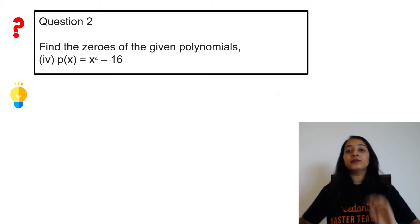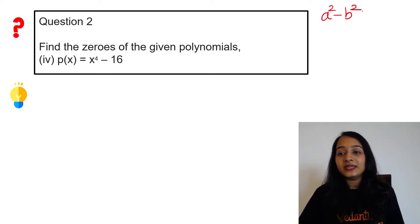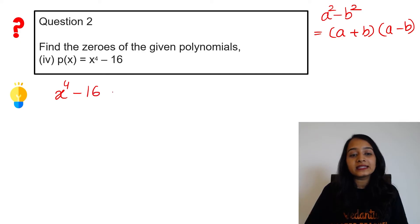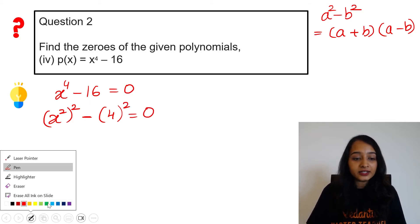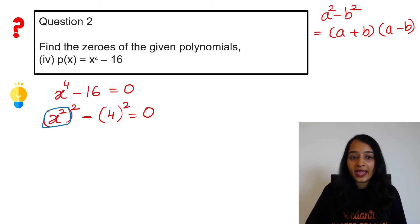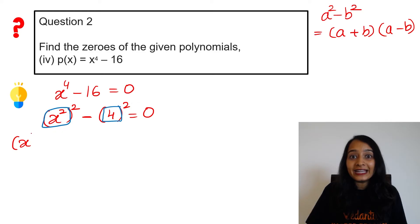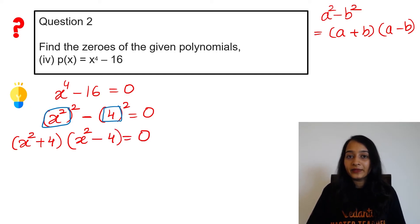Now x to the power 4. Before that, recall the identity: a² - b² = (a + b)(a - b). Now x⁴ - 16 has to be zero to find the zeros of the polynomial. We can write x⁴ as (x²)². We can write 16 as 4². Now it is in the form a² - b² = (a + b)(a - b).